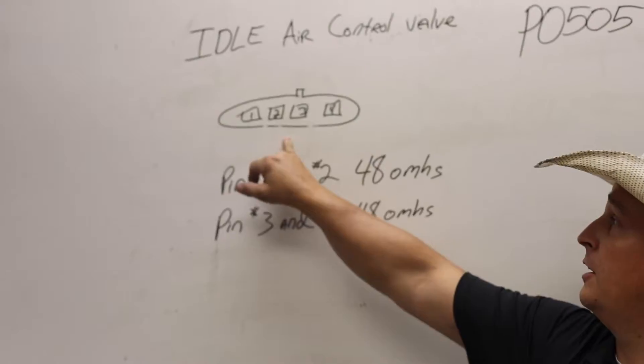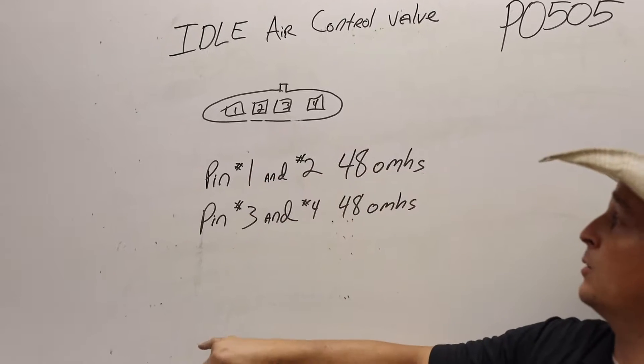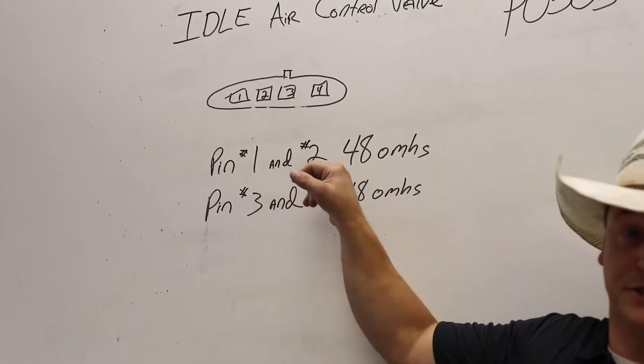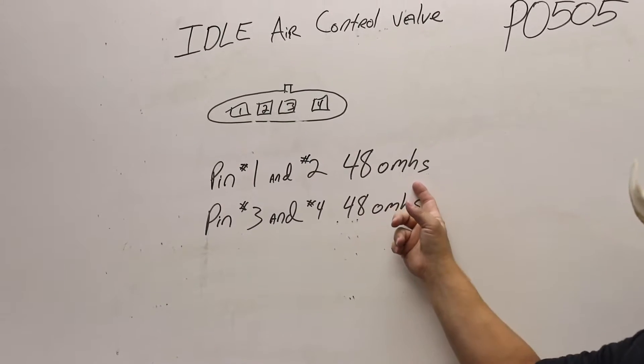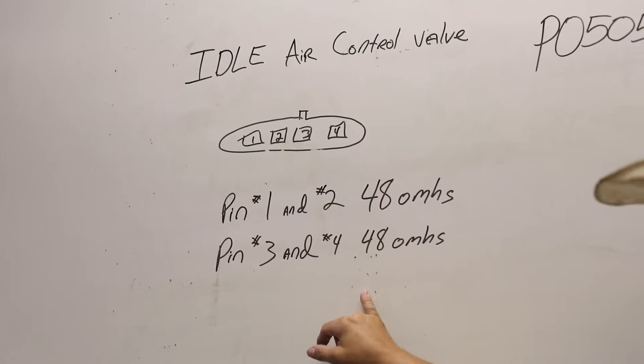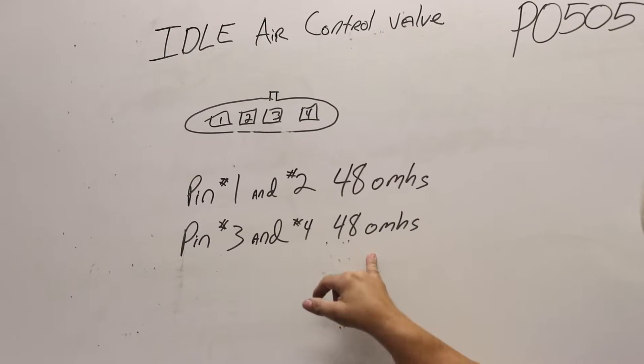What you're going to do is you've got the plug here. It's got one, two, three, and four. One coil pack is on pin number one and number two. You should get 48 ohms when you ohm across that coil pack. Pin three and four is your other coil pack. You're going to get 48 ohms on that.